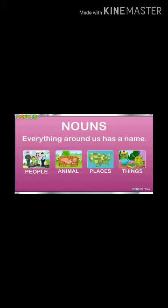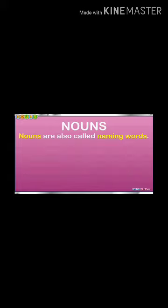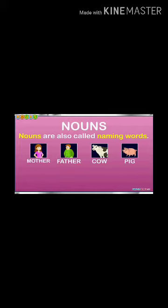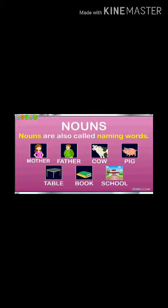Nouns are also called naming words. Anything that has a name is called a noun. In this slide, mother and father come under the category of person. Then cow and pig — they are animals. If you talk about things, that is table and book. And the place is school.